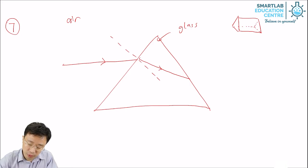Once it hits the separation between glass and air again, you draw the normal. And this time, from glass to air, which is optically less dense, you bend away from the normal.